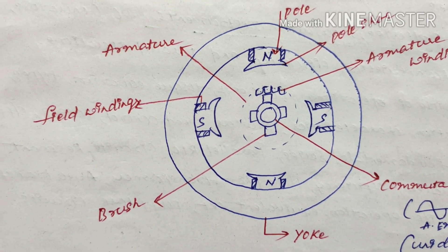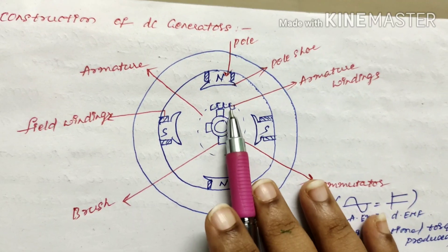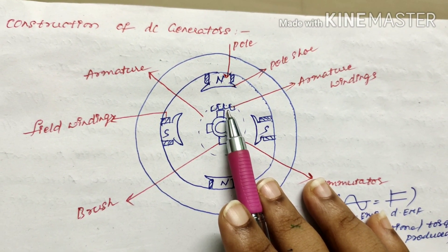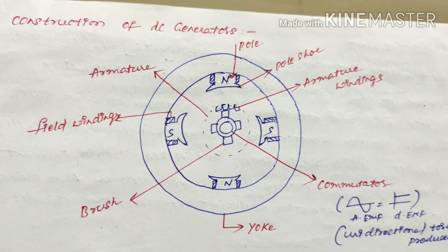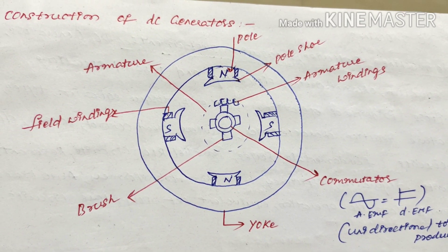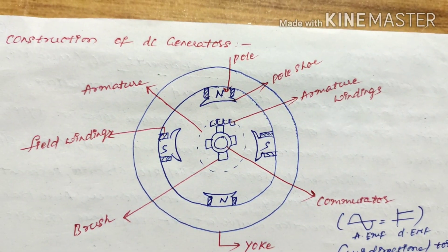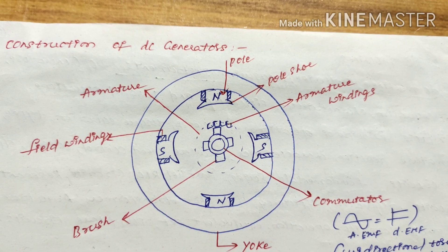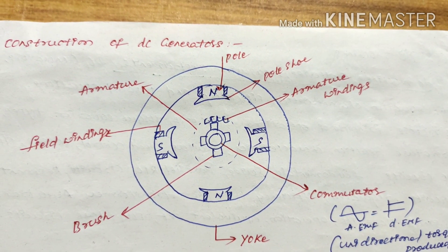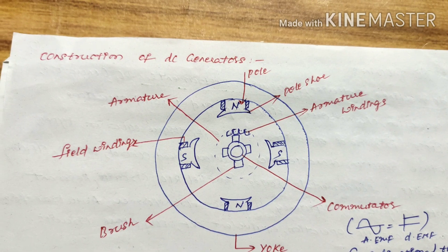Armature windings are wound in a flat form and are placed in two types: lap winding or wave winding. Brushes collect current from the commutator and are made up of carbon or graphite.